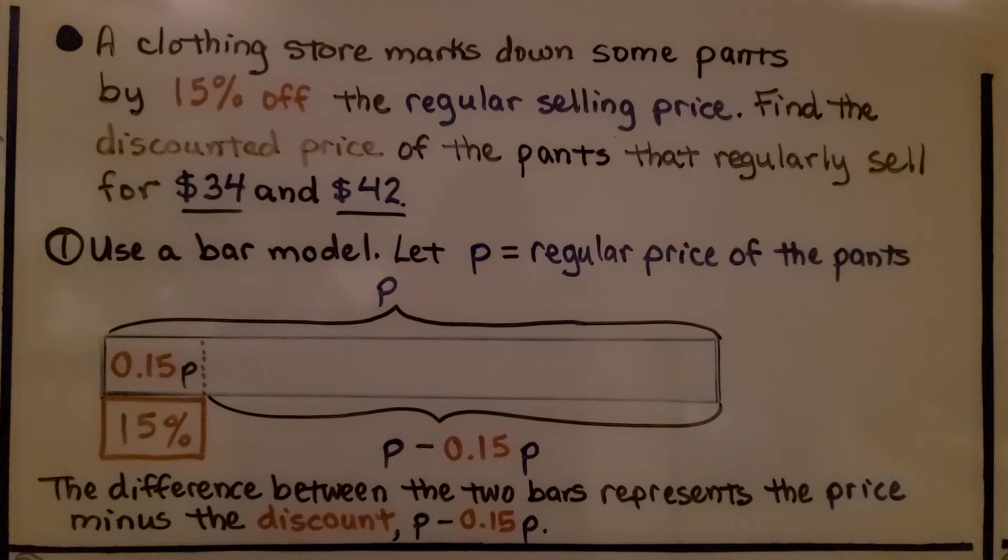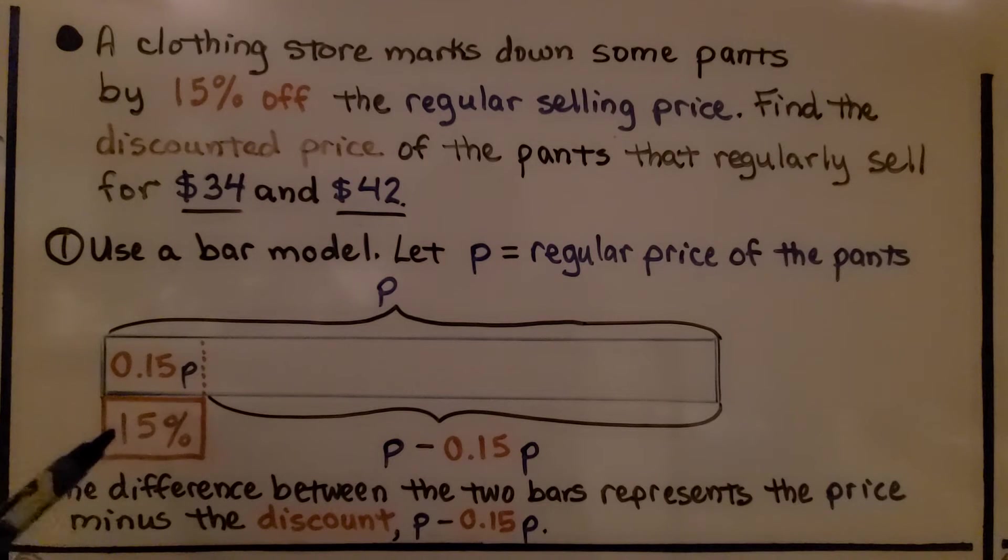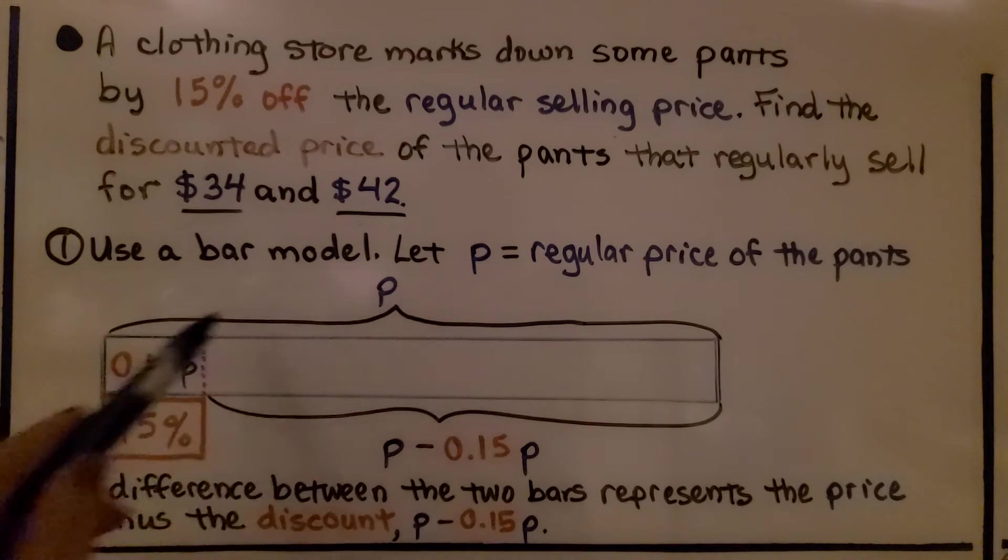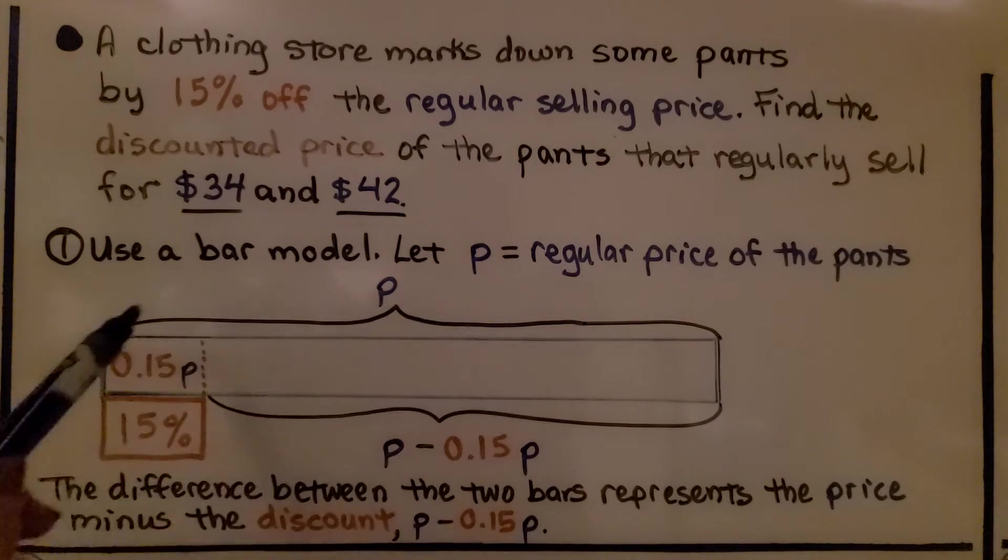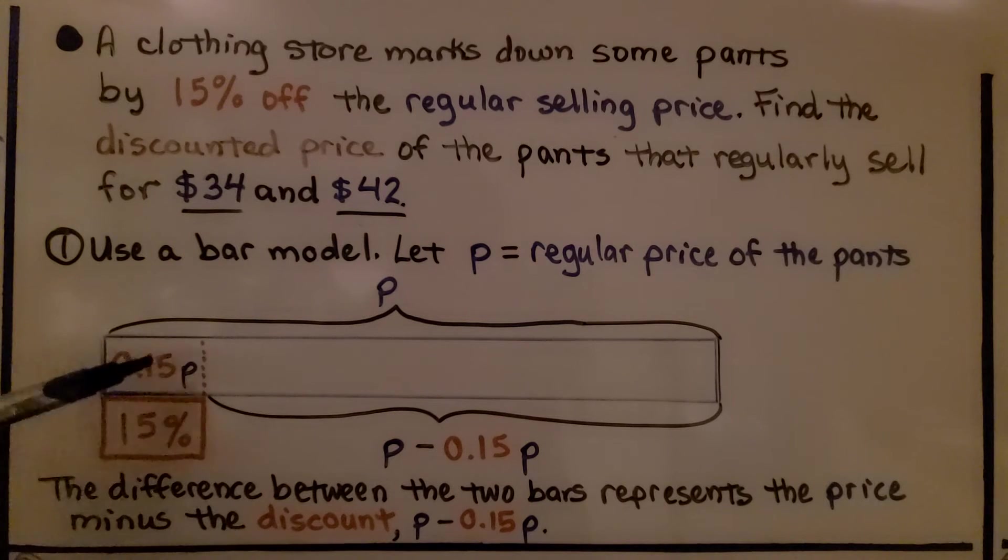We can use a bar model. We're going to let P equal the regular price of the pants. So that's this entire bar. We're going to take off 15% as 0.15 times P, the original regular price. And what's going to remain is P minus 0.15 times P. That's the difference between the two bars. It represents the price minus the discount. So we have the original price minus that 15% times P.